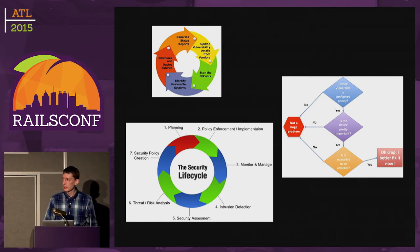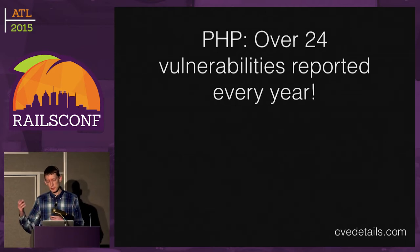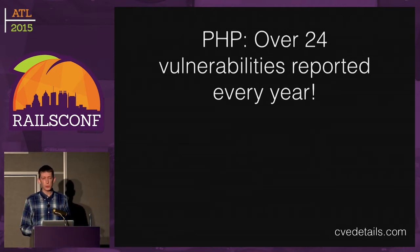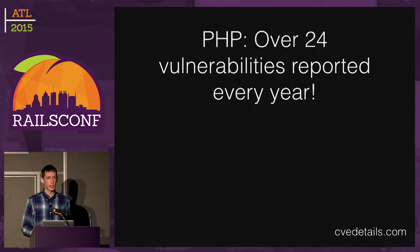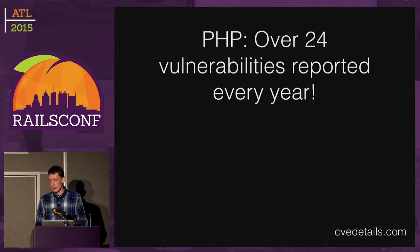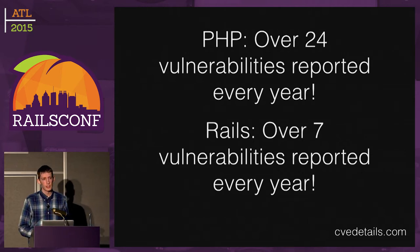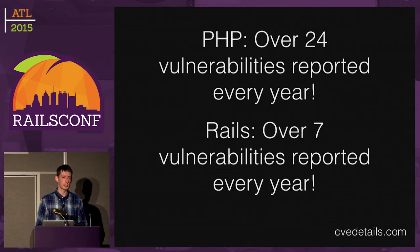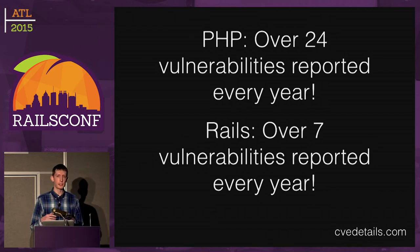It's fun to pick on PHP at RailsConf. PHP has 24 vulnerabilities on average in the core platform every year. Unfortunately, Rails — not even talking about Ruby, just Rails — has a similar story. Over the existence of Rails there have been on average seven CVEs attributed to it every year, and that's actually had an uptick in recent years into the double digits.